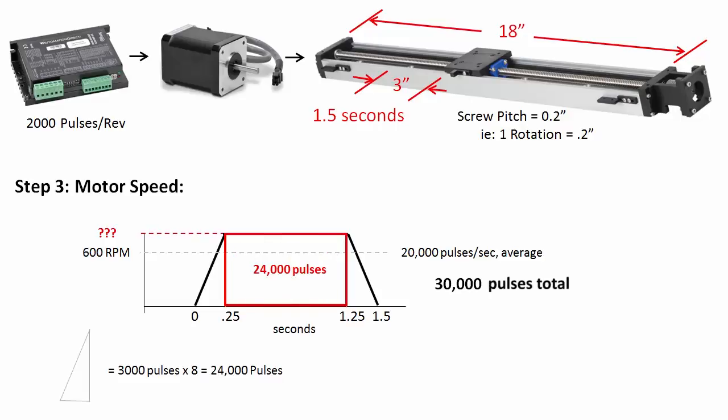The rectangle has 8 of those triangles so it has 24,000 of the 30,000 pulses. And since this is just the area of a rectangle and we know this time is 1 second, then the frequency must be 24,000 pulses per second. The drive issues 2,000 pulses per rotation so we need 12 revolutions per second or about 720 RPM.